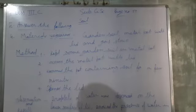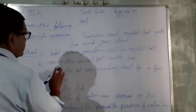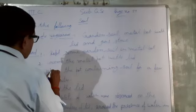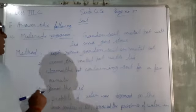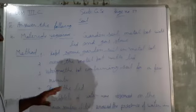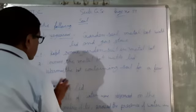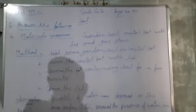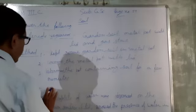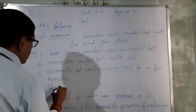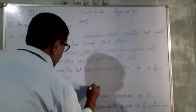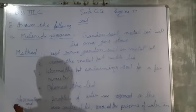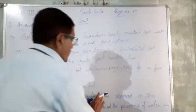Method: Step 1 — kept some garden soil in the metal pot. Step 2 — covered the metal pot with the lid. Step 3 — warmed the pot containing soil for a few minutes. Step 4 — opened the lid.